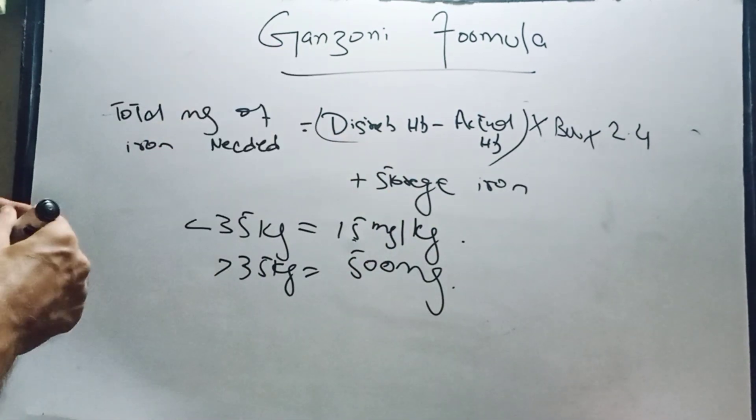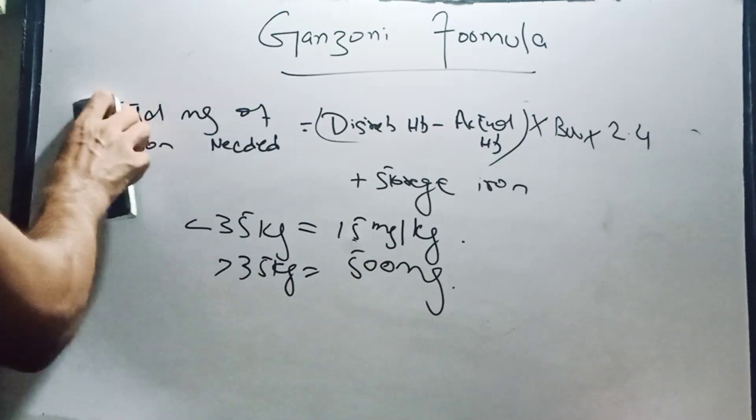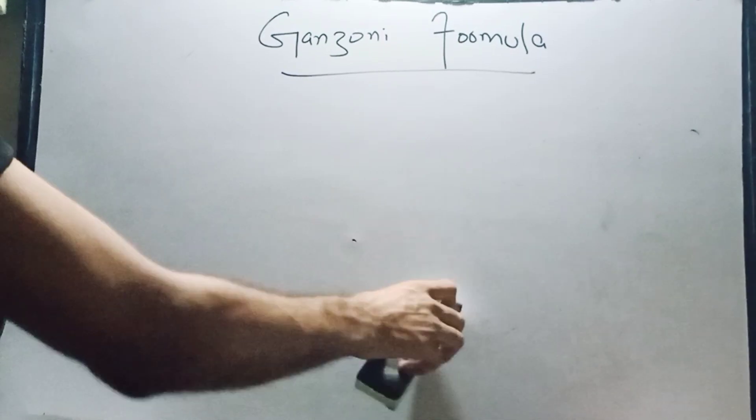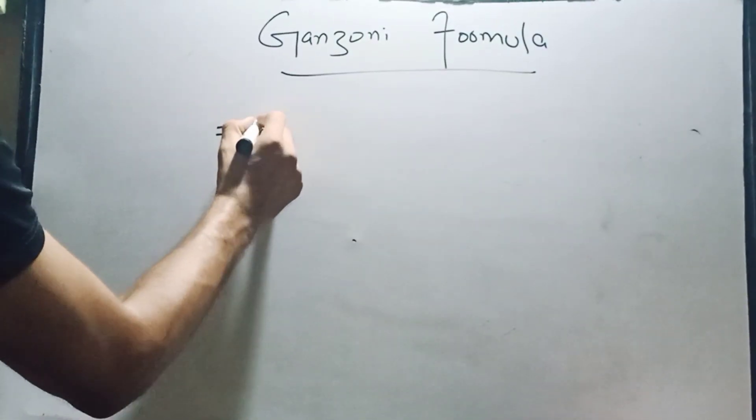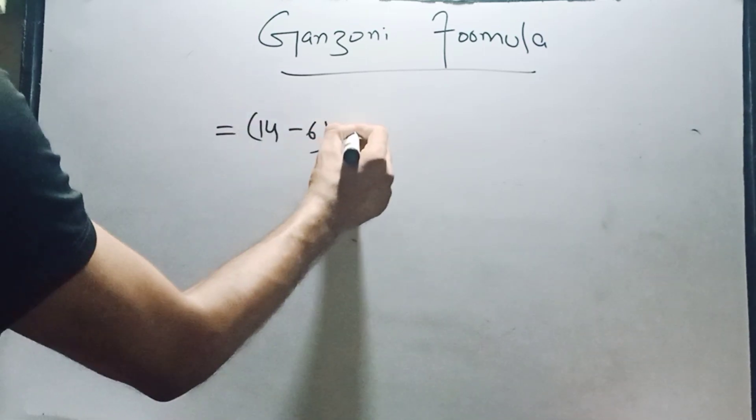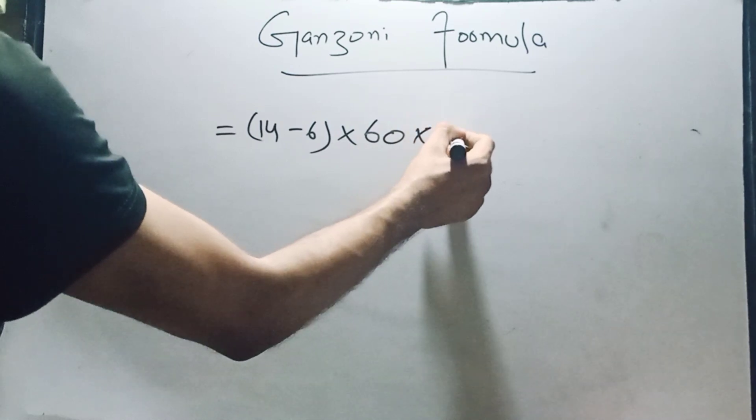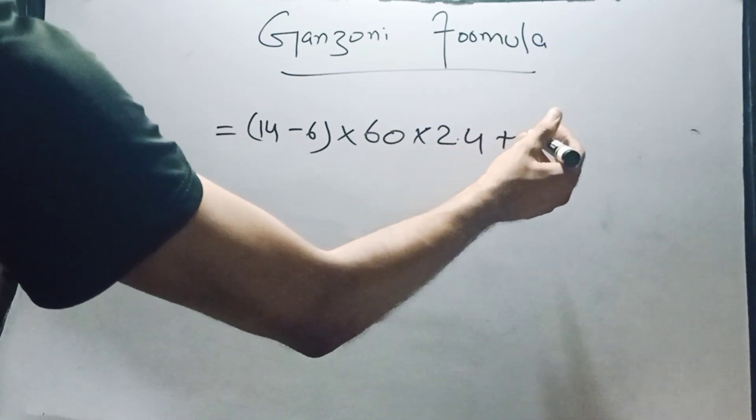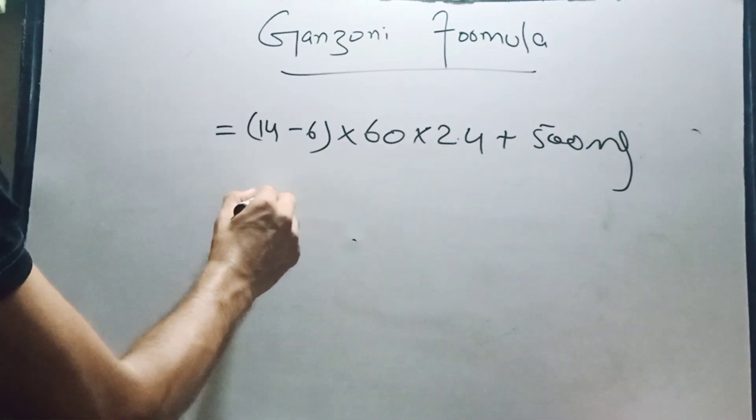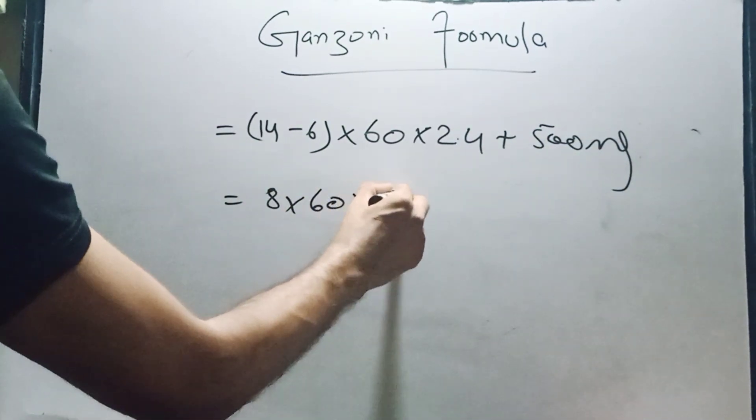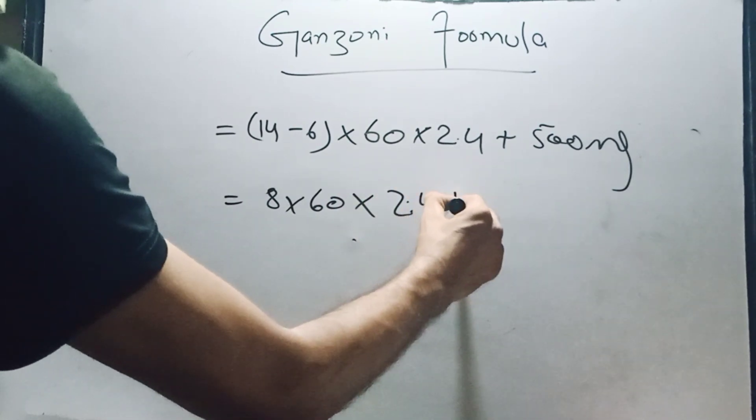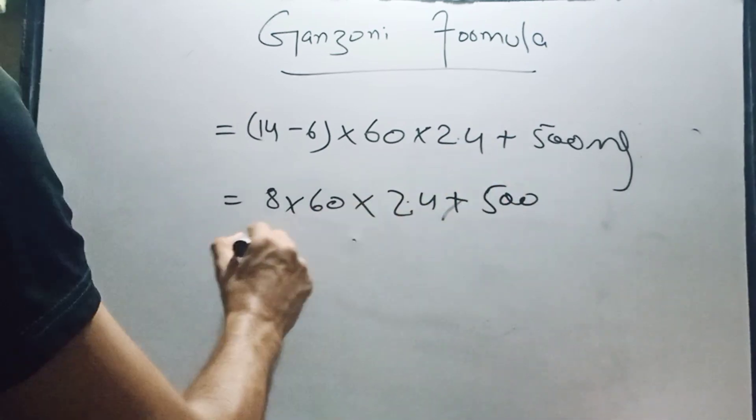Now we discuss this formula with an example. For a patient with 60 kg body weight and Hb of 6, the formula will be: desired Hb of 14 minus 6, multiplied by body weight 60, multiplied by 2.4 which is a constant, plus 500 which is storage iron. So 8 times 60 times 2.4 plus 500.